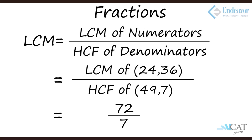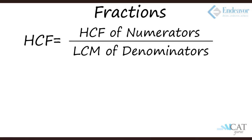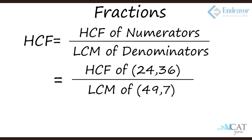So it is 72 by 7 is the LCM. The HCF. Now what do we find the HCF of the same pair of fractions? The HCF has to be done for the numerators and the LCM has to be done for the denominators. So HCF of the numerators here again is 24, 36. The HCF is 12 and the LCM of the denominators of 49 and 7 is 49. So the answer is 12 upon 49.